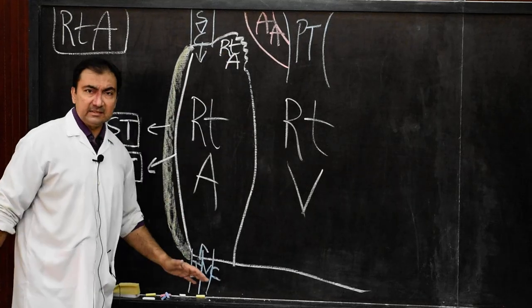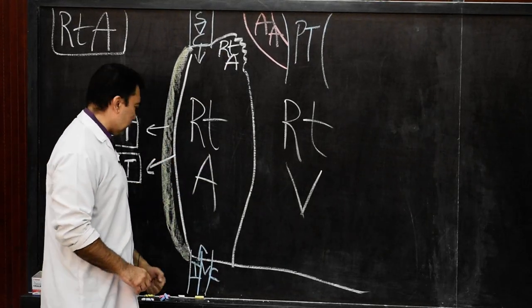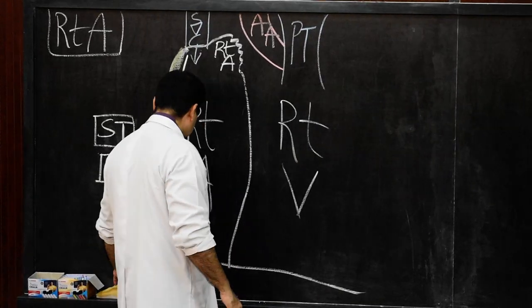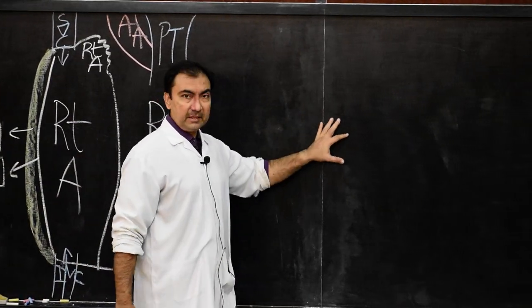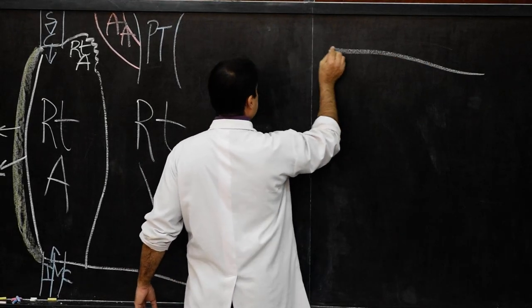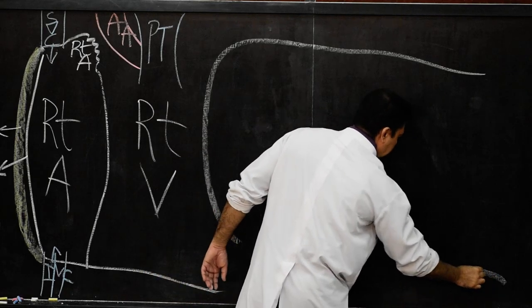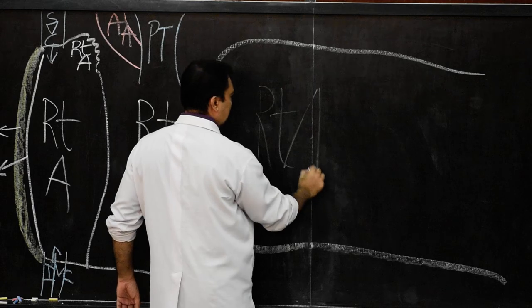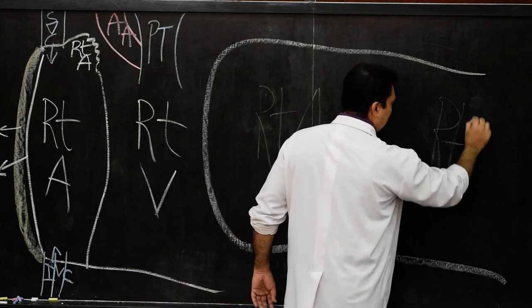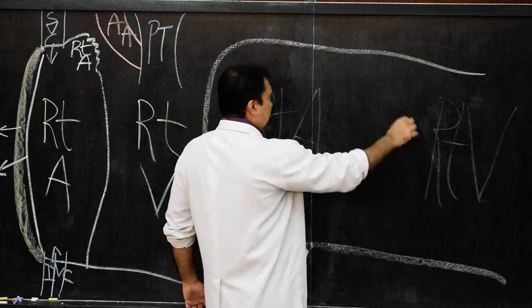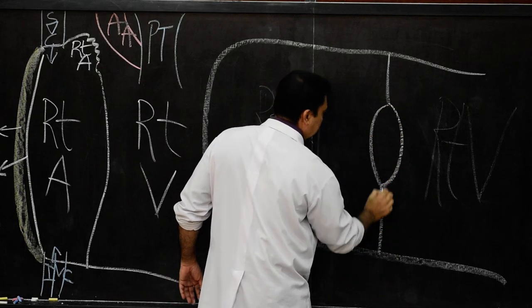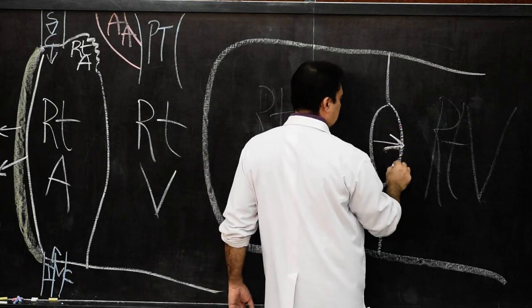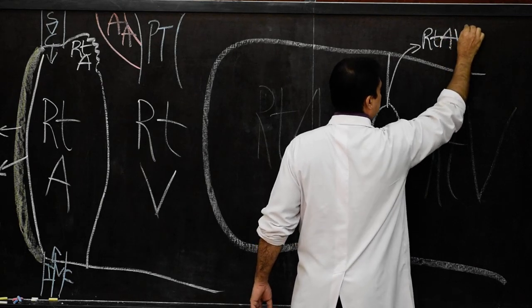After discussing the features on the external surface of the right atrium, we now draw the inner structure of the right atrium. When we open the right atrium entirely, we have this portion as the right atrium and this portion as the right ventricle. We show the right atrioventricular opening.